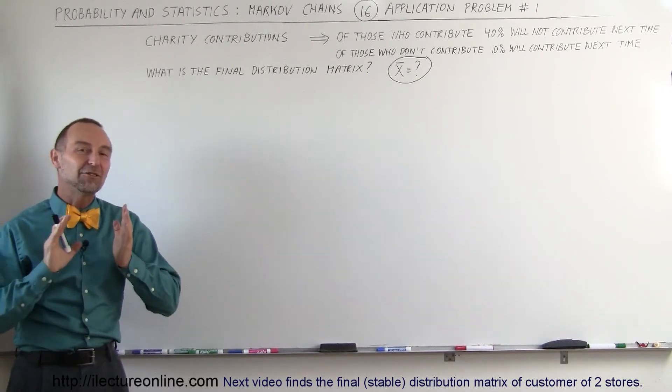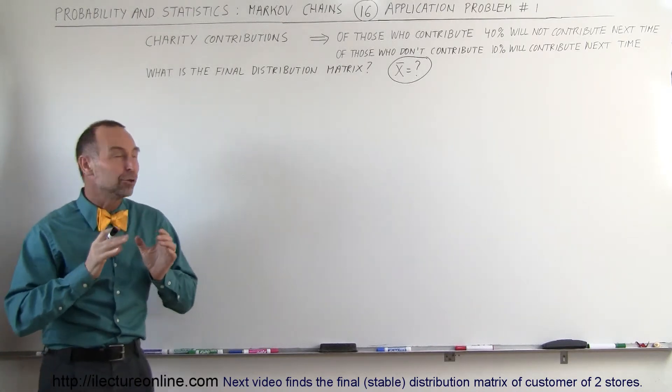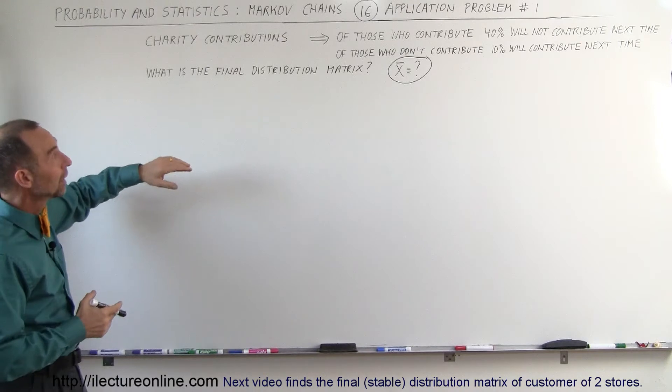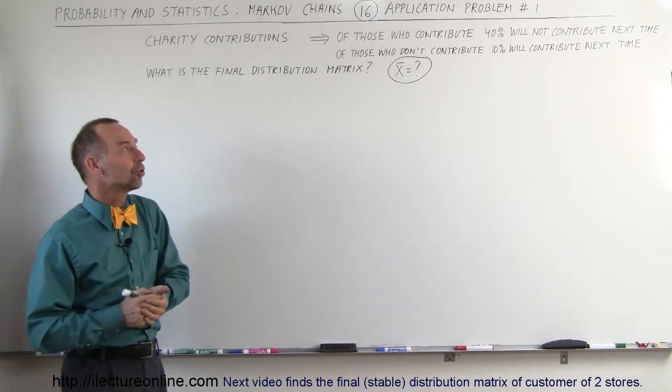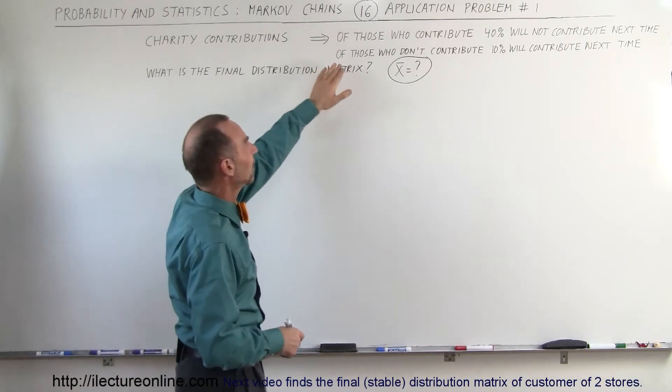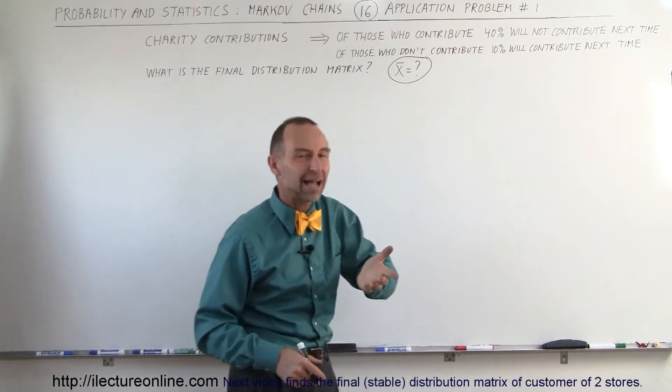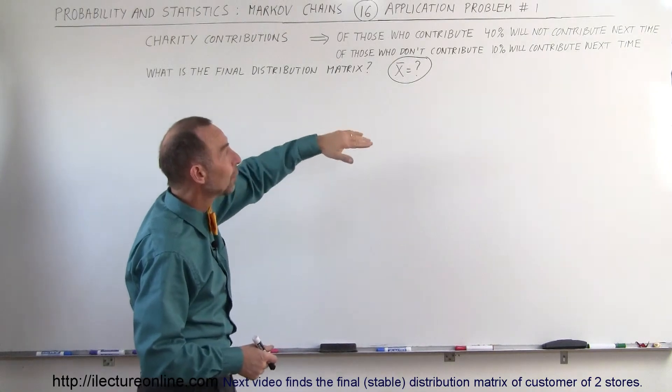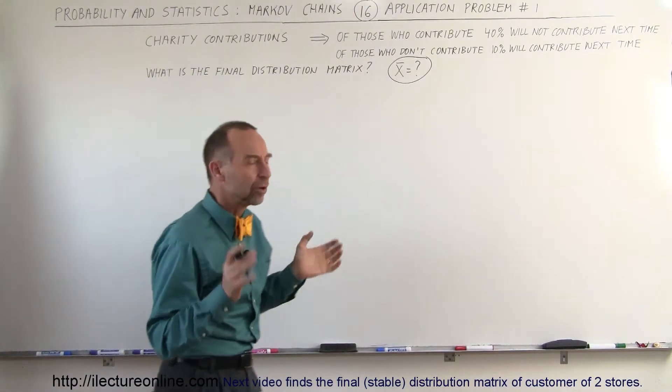Welcome to lecture online. In this video, we're going to show you how to do an actual example, how to actually use or utilize Markov chains. Here we have, for example, a charity, and we're going to look at the charity contributions. We did a study and found out that for those who contribute, 40% will not contribute the next time, on a yearly basis. And of those who don't contribute, we can get 10% to then contribute the next time.